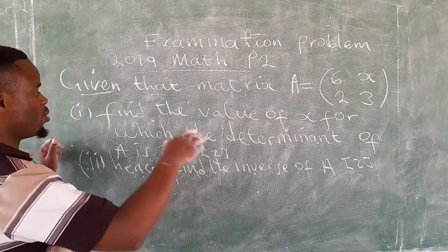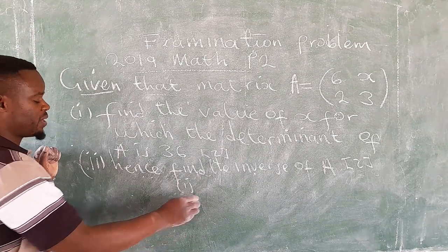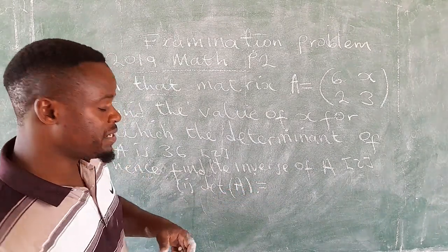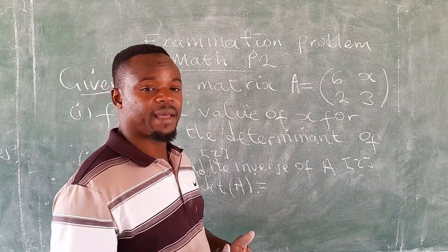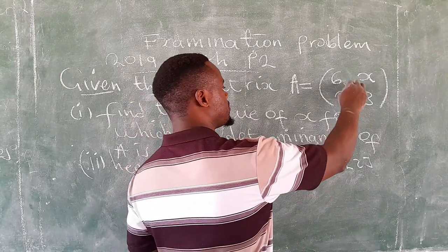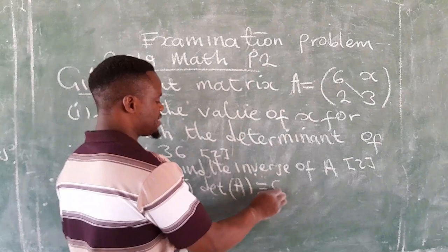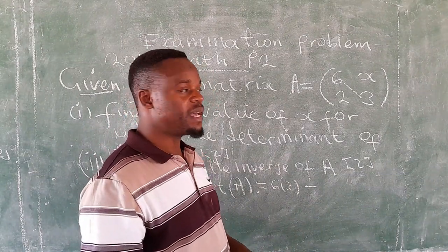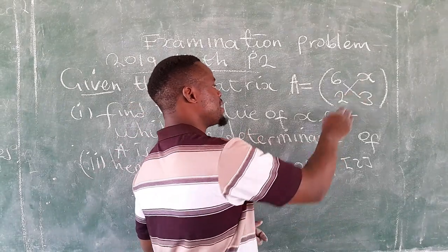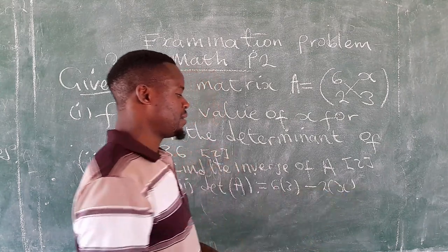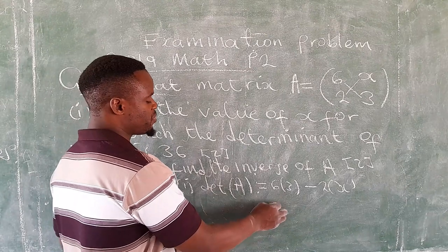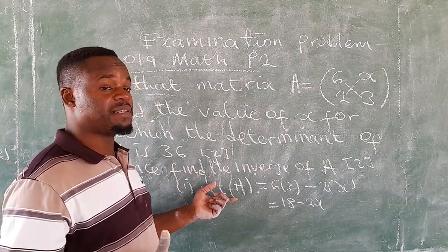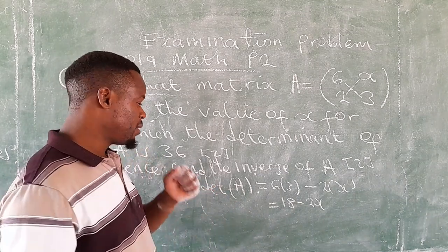We'll start by determining the determinant of matrix A. What you do is multiply the elements in the major diagonal. So that is 6 times 3 - this is the major diagonal - and then we subtract the product of the elements in the minor diagonal. So we're going to write 2 multiplied by x. Then 6 times 3, that's 18 minus 2x. That should be the determinant that we have to evaluate.